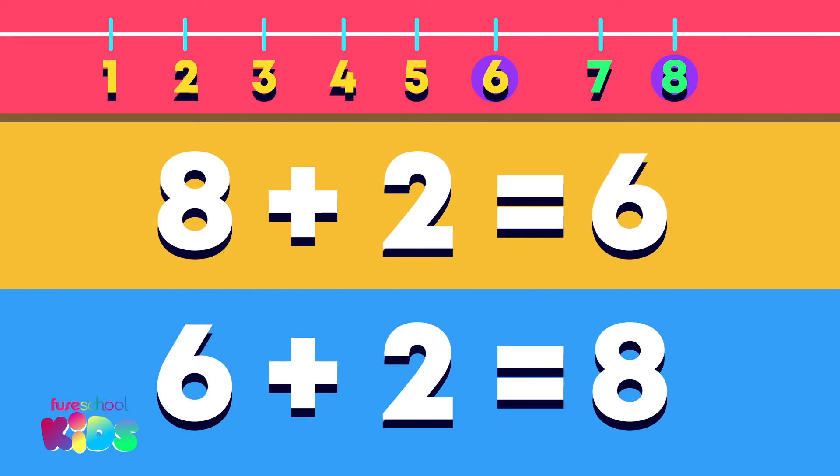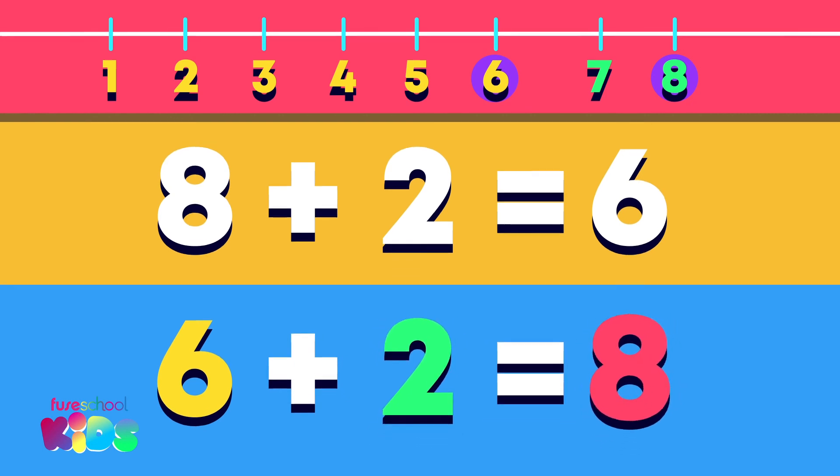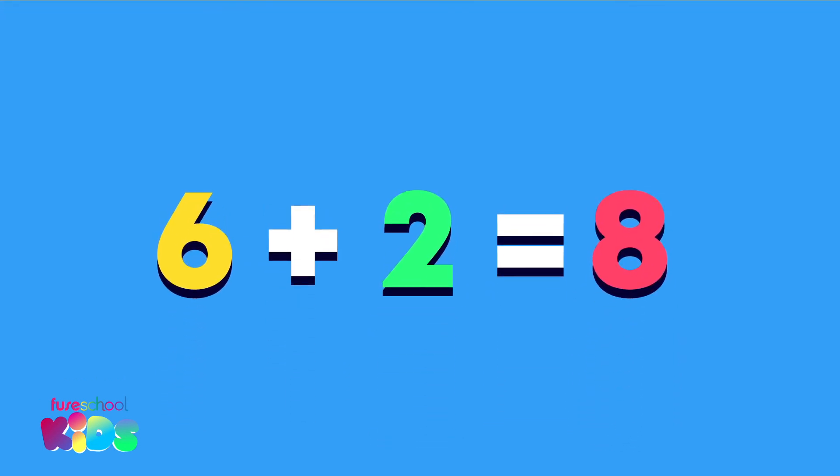Which addition number sentence shows how we added the butterflies together? We added six and two, which was eight all together. That means we write six plus two equals eight. Six plus two equals eight is our number sentence.